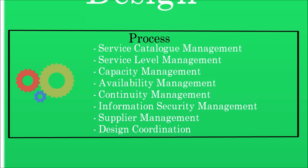Fourth is Availability Management, which is responsible for ensuring that all IT infrastructure, processes, tools, and roles are appropriate for the agreed availability targets. Fifth is IT Service Continuity Management, which manages risks that could seriously impact IT services. It ensures that the IT service provider can always provide minimum agreed service levels by reducing the risk from disaster events to an acceptable level and planning for the recovery of IT services. Sixth is Information Security Management, which ensures the confidentiality, integrity, and availability of an organization's information, data, and IT services.